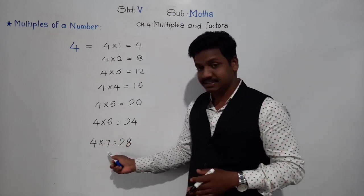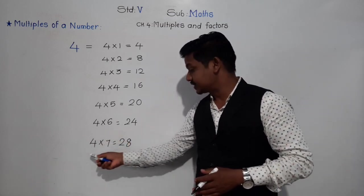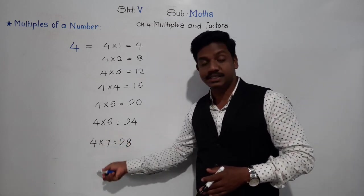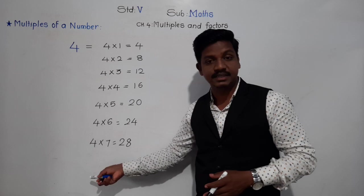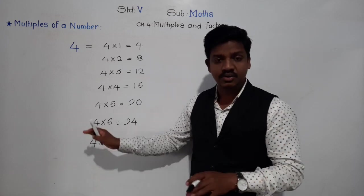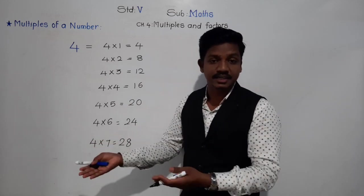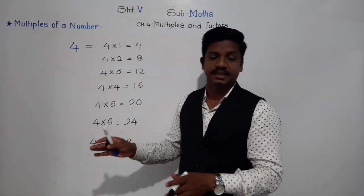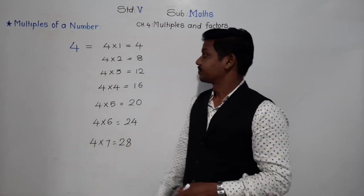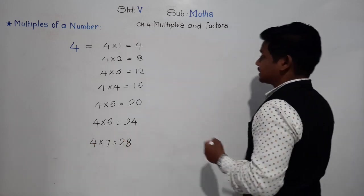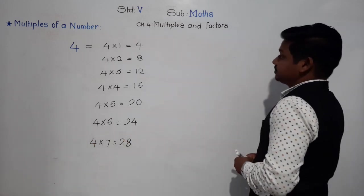We have taken up to 7 here, but 4×8, 4×9, 4×100, 4×500 — we can go on with any natural number. Let me show you one more example.